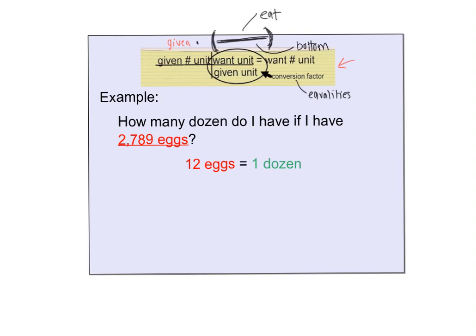Here's an example that should be pretty easy. How many dozen do I have if I have 2,789 eggs? My formula says I take what's given, that's 2,789 eggs. Whatever they give me to start with in the problem, I'm going to multiply it by a fraction.